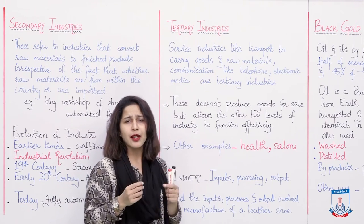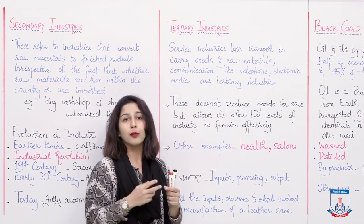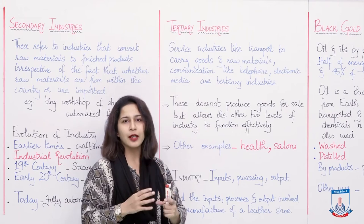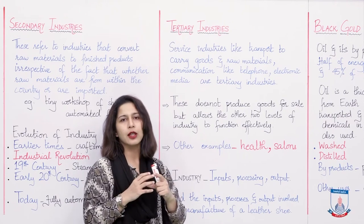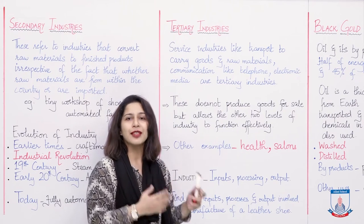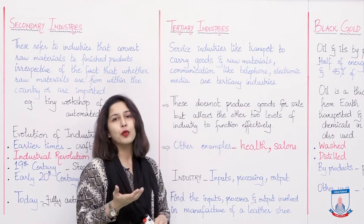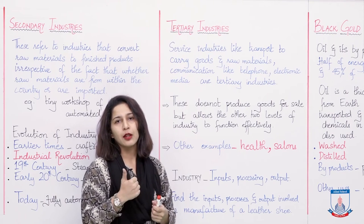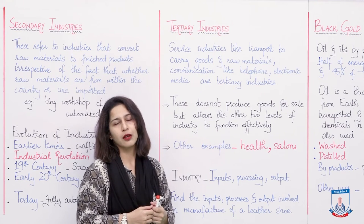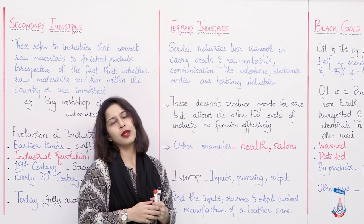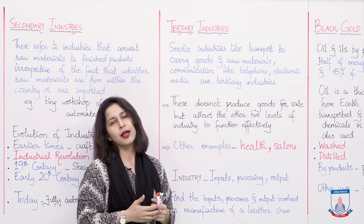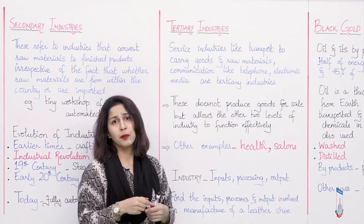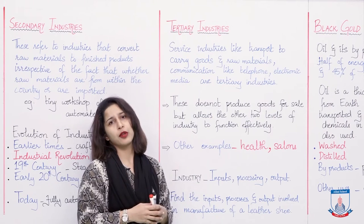Processing is a person stitching a shoe — that is processing. The bleaching of that tree trunk so that it converts to paper, its cutting, its sizing — all these things come under processing. Output is our finished product — the thing that comes into our hands. A notebook is an output, a finished product. A shoe is an output, a finished product. A shirt is an output, a finished product. Even the pen or pencil you are holding — that is a finished product.